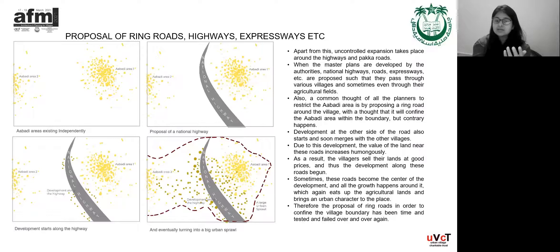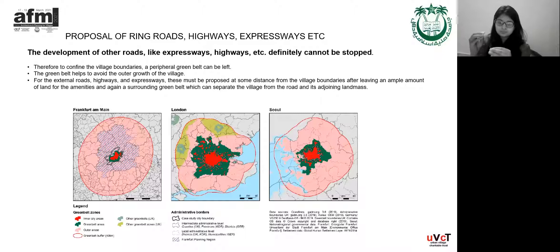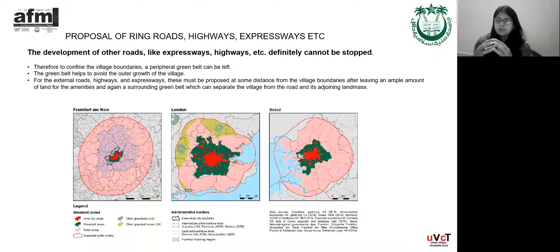That is something we need to take care of. Of course, the development of expressways, highways, etc., cannot be stopped. Yes, they can be proposed, but by leaving a peripheral green belt. This peripheral green belt will act as a buffer between the abadi areas and the road. If there is a buffer, the outward growth of the village decreases because they are confined by the green belt. Therefore, development near roads and highways takes place, but it never gets added to the village abadi areas and does not form a big urban sprawl. There are a few examples where this practice has been successfully implemented.